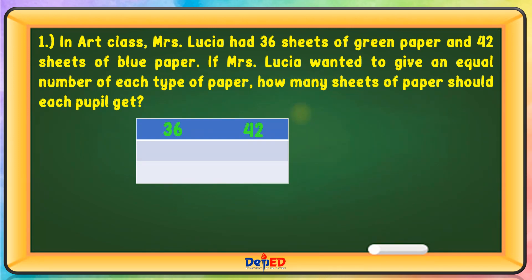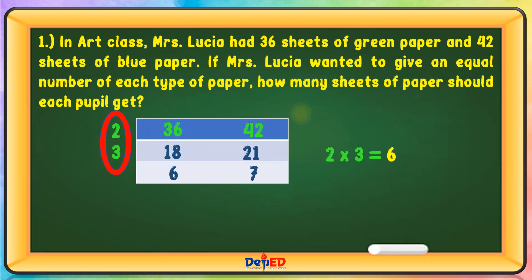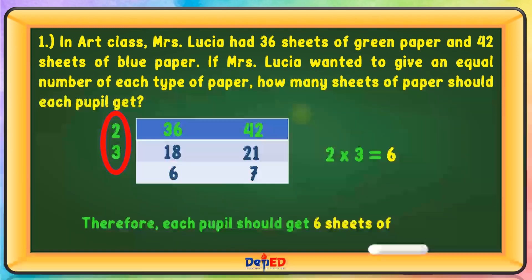We have 36 and 42. Using division: 2 divided by 36 is 18; 2 divided by 42 is 21. Now, prime number 3: 3 divided by 18 is 6; 3 divided by 21 is 7. 2 times 3 equals 6. Therefore, each pupil should get 6 sheets of paper.